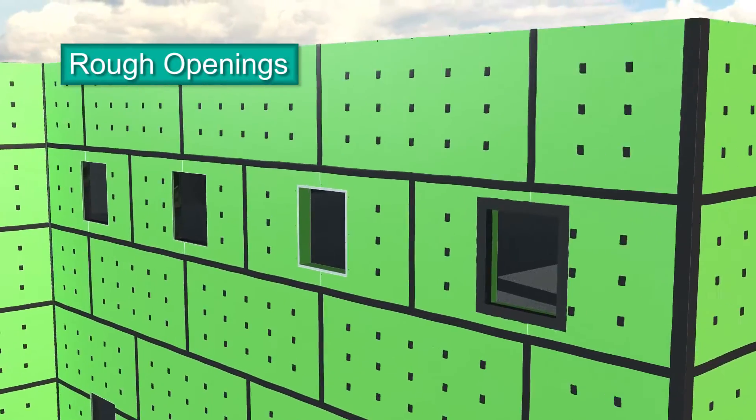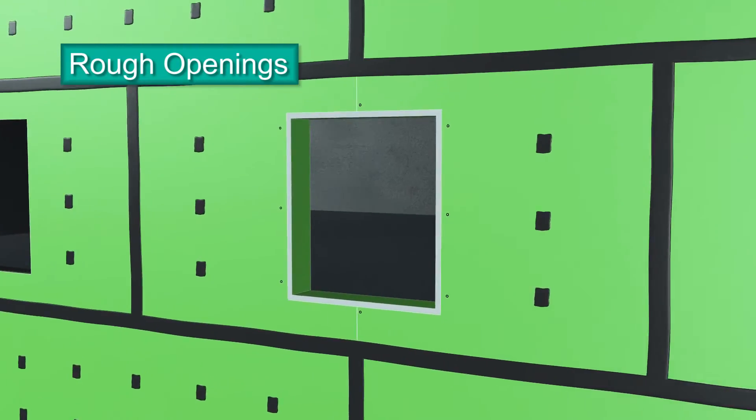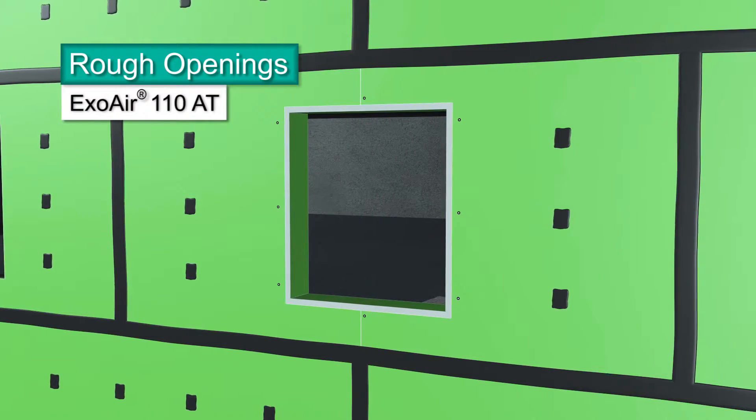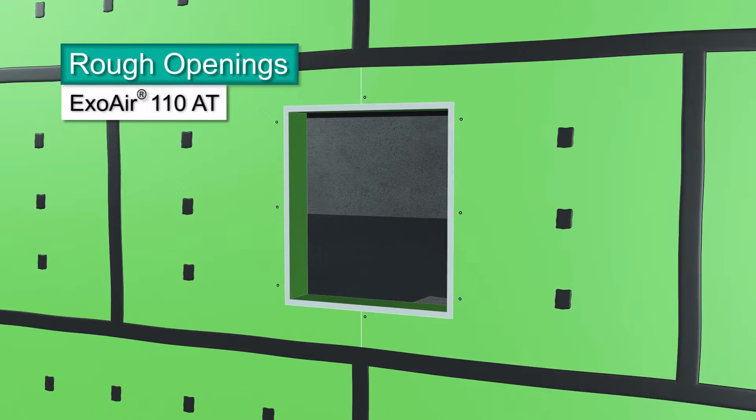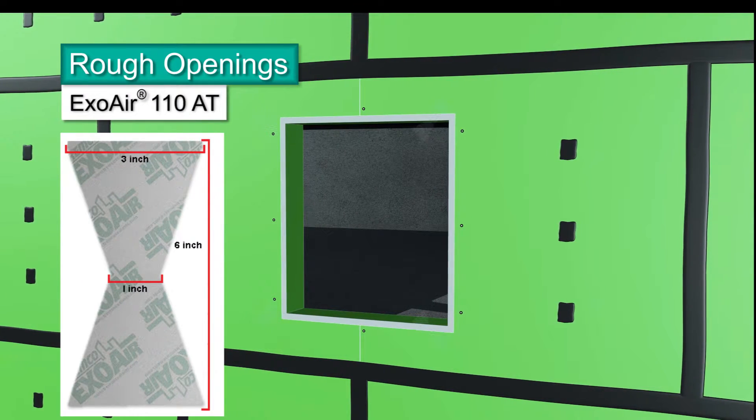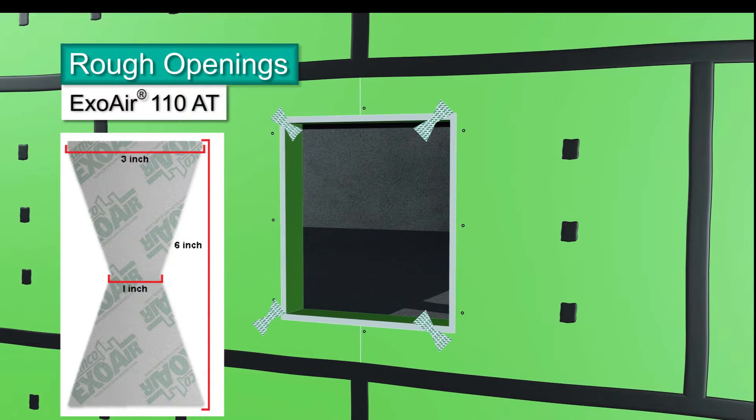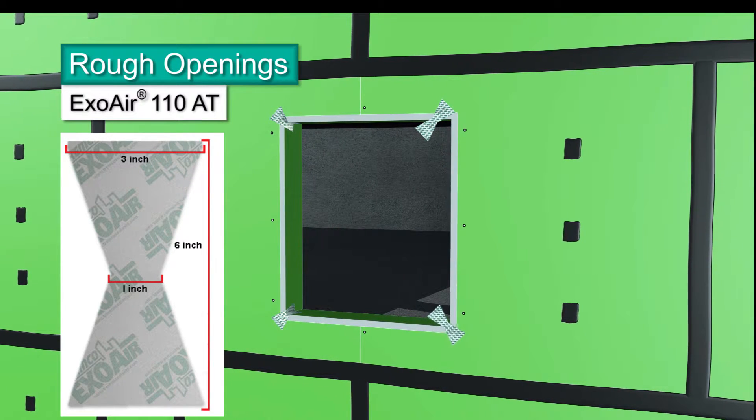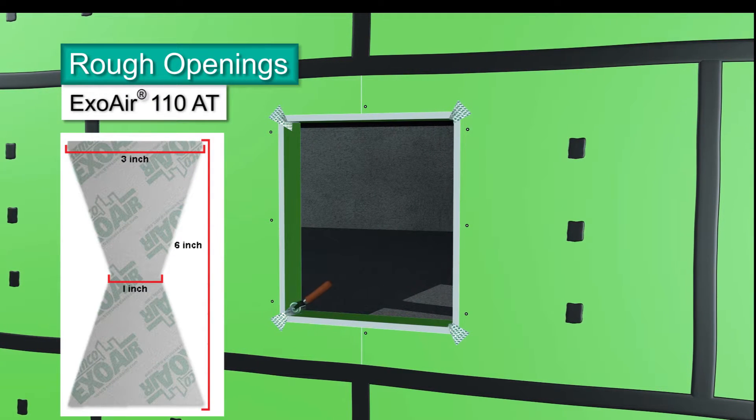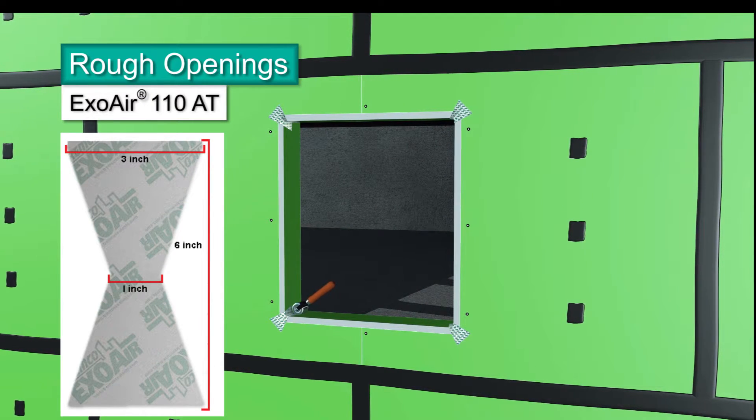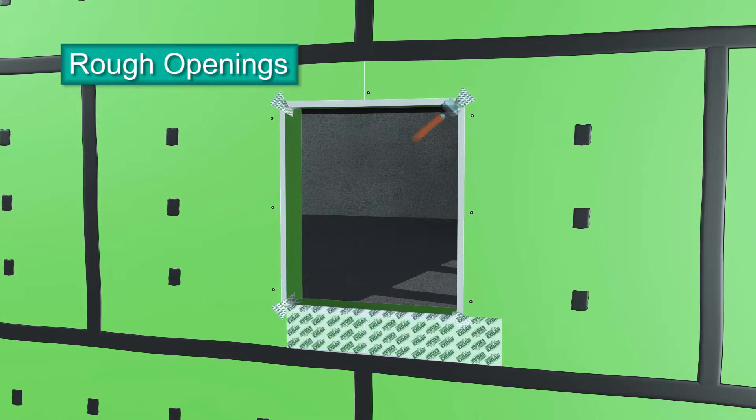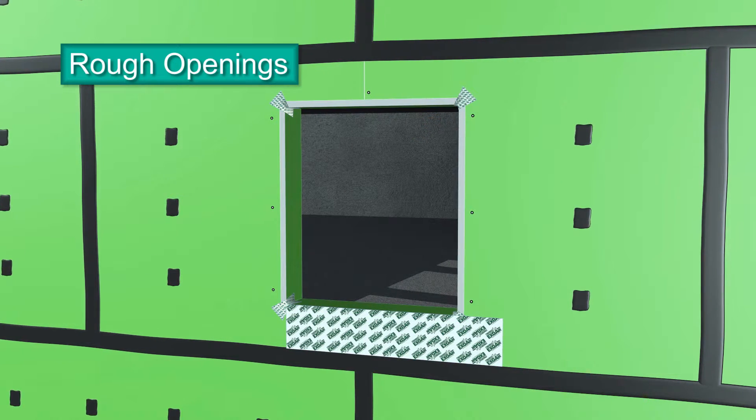Detailing rough openings with Dimonic 100 is the recommended application. Using ExoAir 110 AT is a second option. Cut pieces of the ExoAir 110 AT into a bowtie shape, 6 inches long, 3 inches wide at each end, and 1 inch wide at the center. Remove the release paper and apply bowties to each corner with the jams, sill, and head meat. Press firmly and roll into the corners and onto the face of the panel to remove air bubbles.